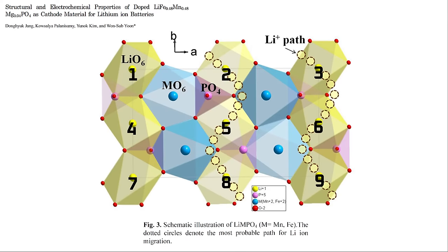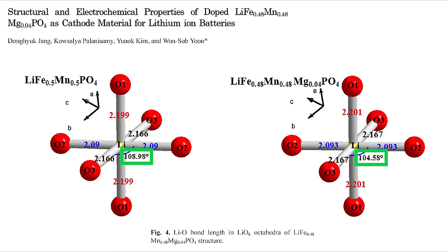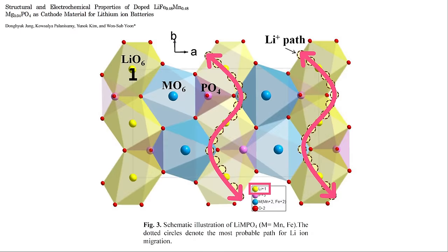Zooming out to the broader crystal structure, we can see nine of the octahedra in the context of the rest of the crystal structure. When the battery is charged and discharged, the lithium ions wiggle their way through the crystal structure. By changing the angles and lengths of the bonds within the octahedra with magnesium, it creates a slight change to the crystal structure that in turn creates a smoother path for the lithium ions to flow into and out of the crystal structure, meaning more lithium is available for cycling and therefore more energy.